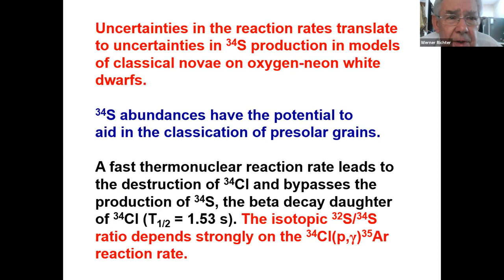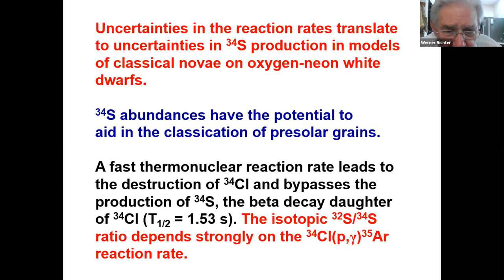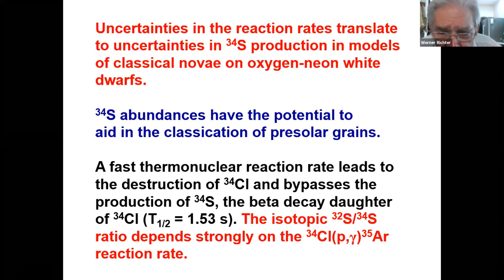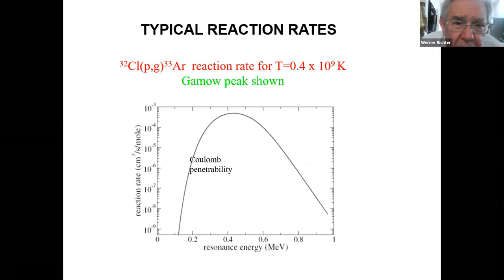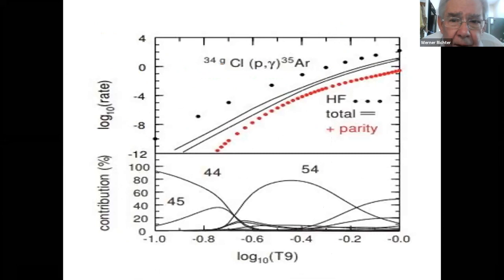So we come to the abundances. Uncertainties in the reaction rate translate to uncertainties in some of the models on classical NOVA. People have an interest in the sulfur-34 to sulfur-32 ratio — these abundances have the potential to aid in the classification of pre-solar grains. A fast thermonuclear reaction rate would lead to the destruction of Chlorine-34 and largely bypass the production of sulfur-34, which is the beta-decayed daughter of Chlorine-34. So the isotopic ratio depends strongly on that particular reaction rate. The standard Gamow peak shown is a combination of Coulomb penetrability and the Boltzmann factor.